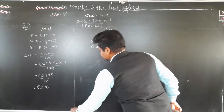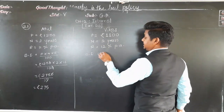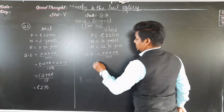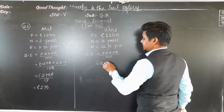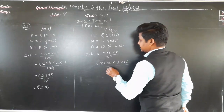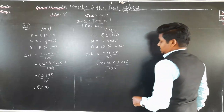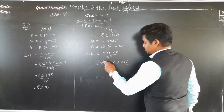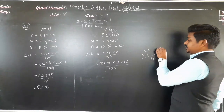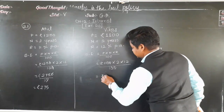Now for Vikas in the second case: simple interest equals P into N into R upon 100 = 1100 into 2 into 12 upon 100. Cancelling two zeros: 12 twos are 24, into 11. Eleven fours are 44: 4 carry. Eleven twos are 22 plus 4 is 26. So the interest is rupees 264.